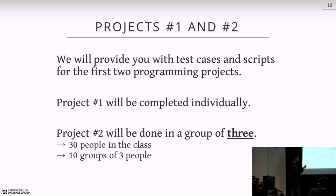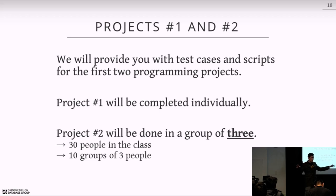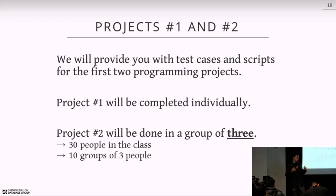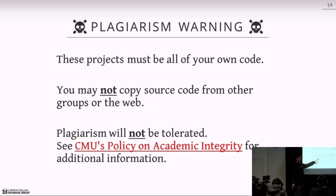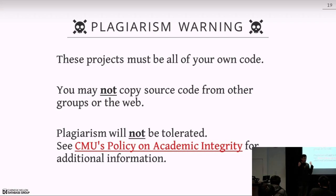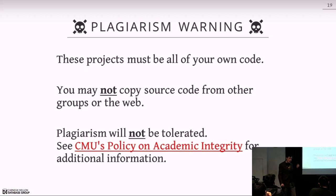For the first project, it's individual. The second project will be done in groups of three — we have 30 people enrolled, so 10 groups of three. Everyone implements the same thing for these first projects: we'll tell you to implement a hash join for the first project, and a concurrent B+ tree for the second. That way we can check correctness and benchmark to see who has the fastest code. You cannot take code from other people in the class or from the internet and pass it off as your own for these first two projects — that is plagiarism and I will report you.